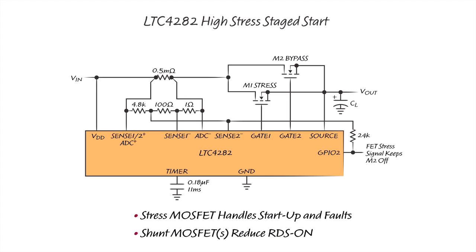This may happen when the input voltage suddenly steps up. After the stress MOSFET has finished the heavy lifting of dragging the output up under load, the bypass MOSFETs are turned on again to minimize the DC power dissipation in the switches. High stress staged start falls between the parallel application and low stress staged start both in the ability to ride through transients as well as in MOSFET cost.